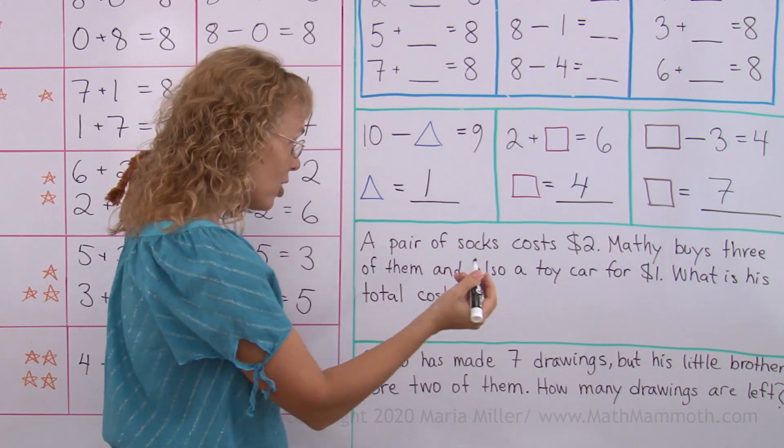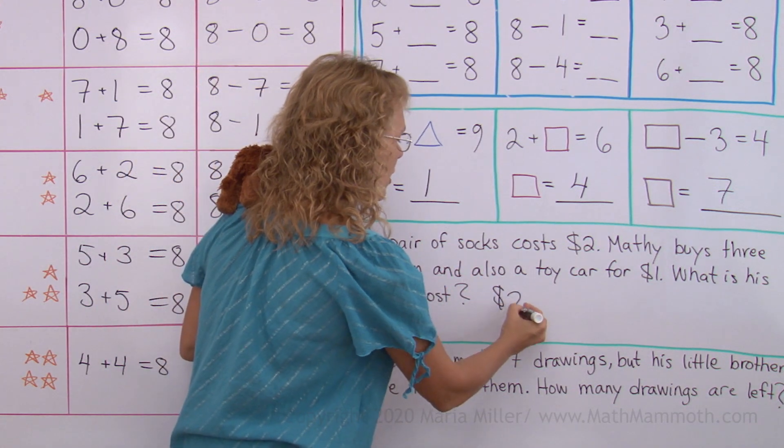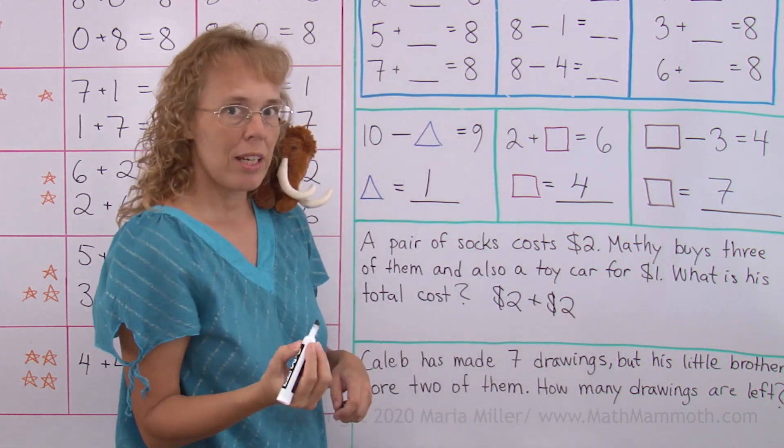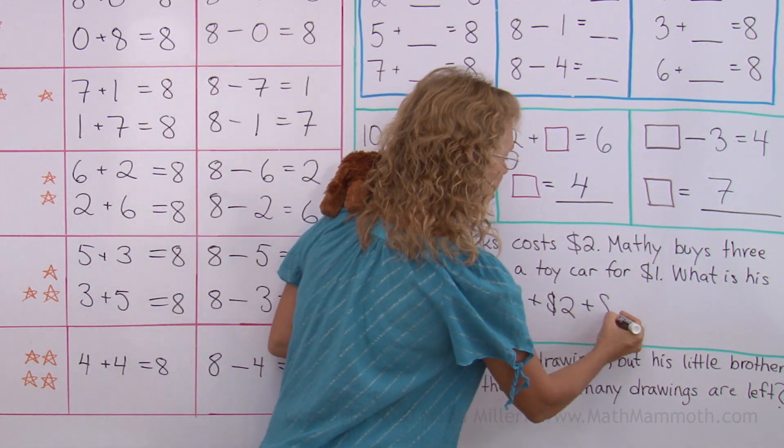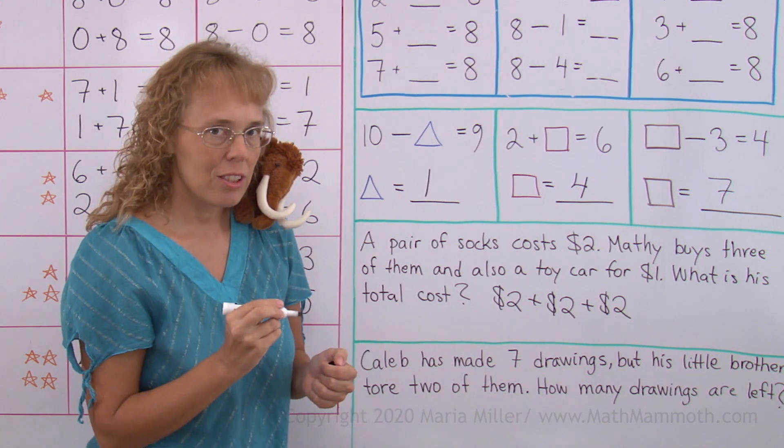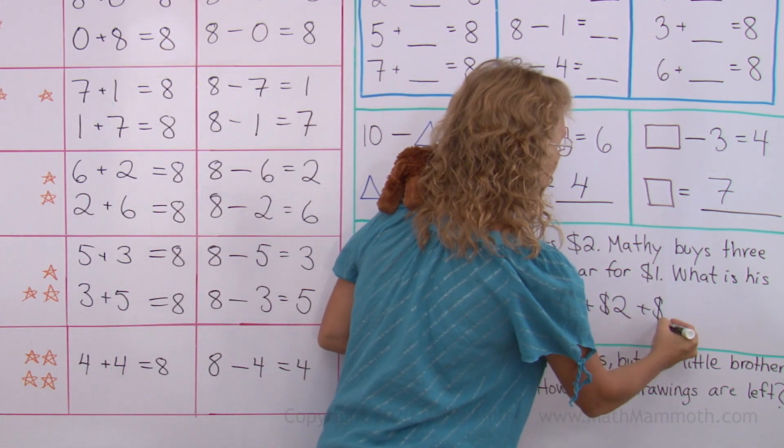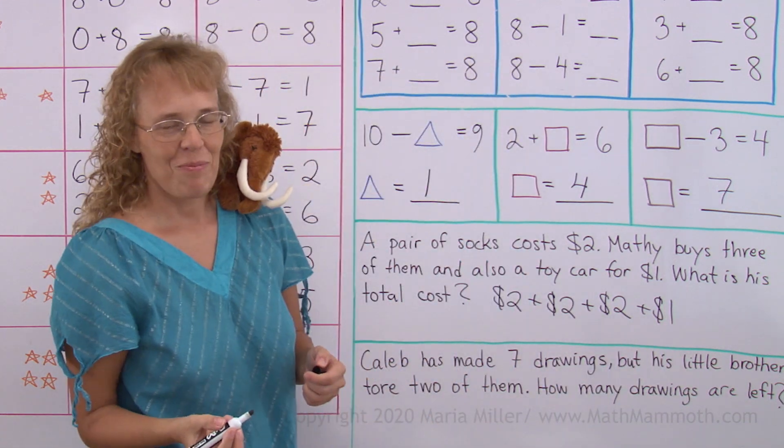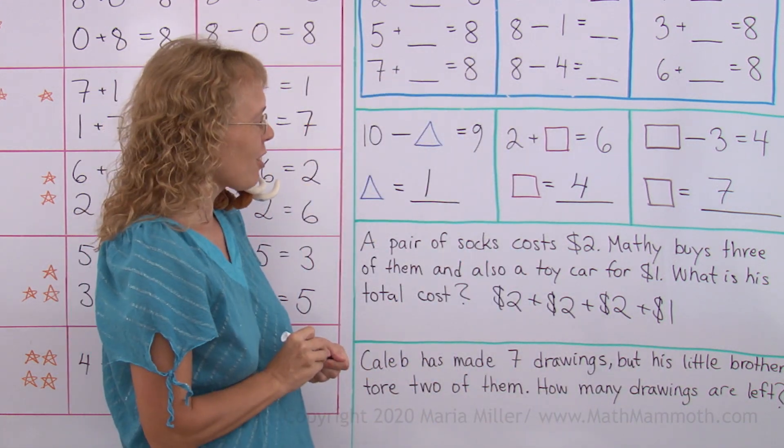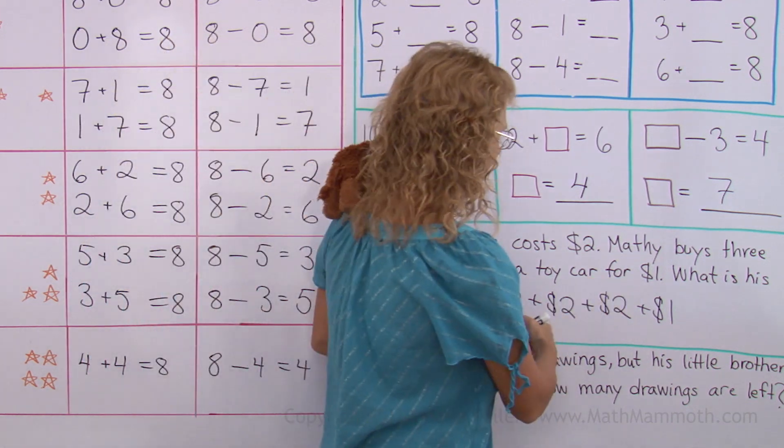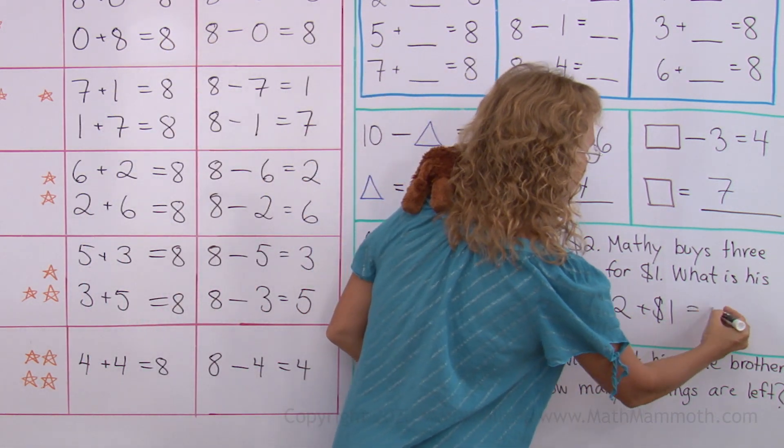$2 is what a pair of socks costs, and Matty buys 3. So I'm gonna write an addition: $2, that's one pair of socks. Another $2, that's the second pair of socks. And then yet $2 for the third pair of socks. And then I will still add $1 because of the toy car. Okay, and now how much is his total cost? 2 plus 2 plus 2 plus 1. That will be 6 here and one more. $7.